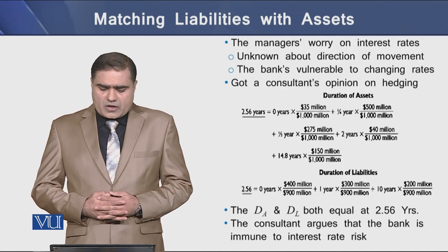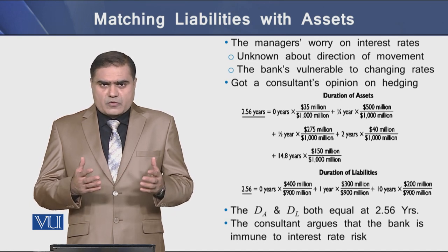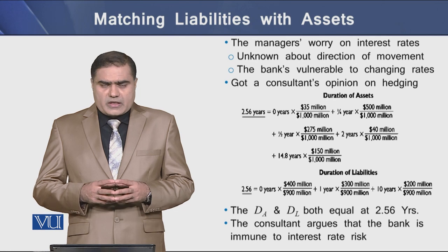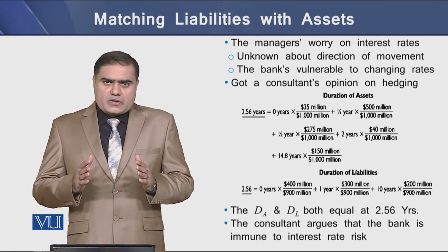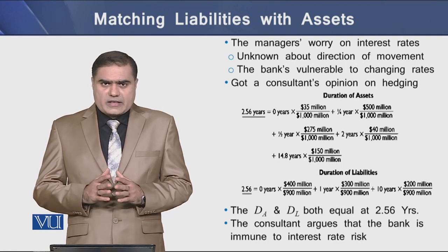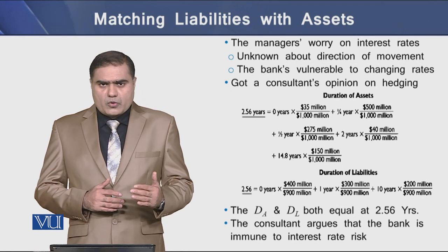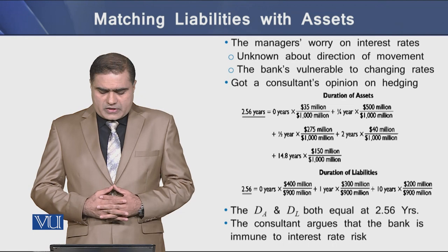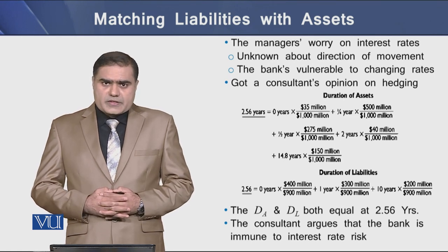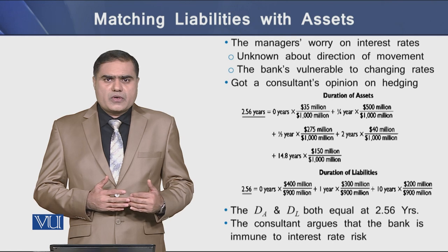Bank management is worried about interest rates because they are uncertain about the direction of movement in interest rates, and they think the bank is vulnerable to changing interest rates. They consulted a consultant on hedging, who determined the duration of the bank's assets and liabilities. Both have an equal duration of 2.56 years. So according to this first consultant, the bank is immune to interest rate risk because the duration of assets equals the duration of liabilities.